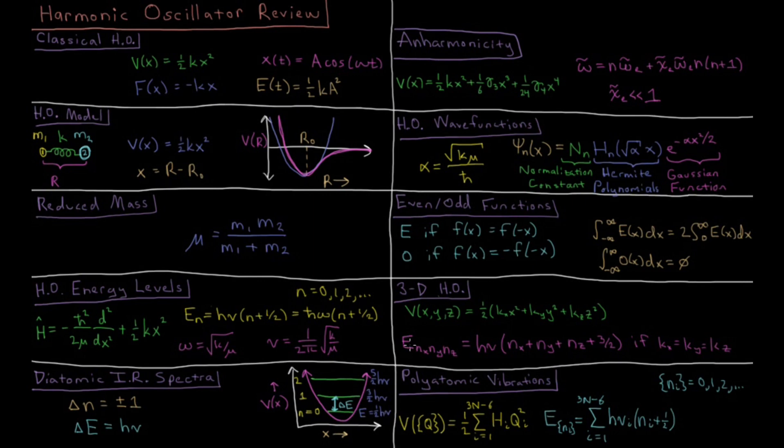What we can do is separation of variables, and we end up with an energy that depends on these three quantum numbers, one for each spatial dimension. We have nx, ny, and nz. If the three spring constants are equal to each other, we can make a simplification.